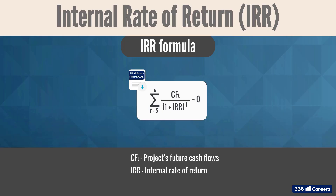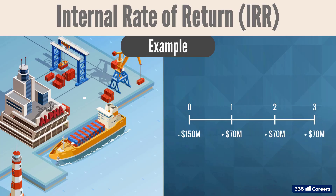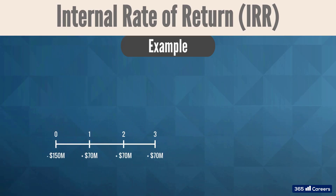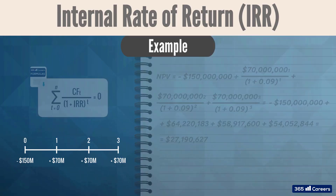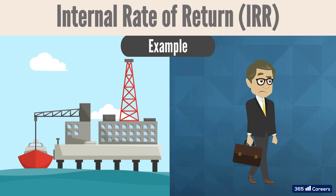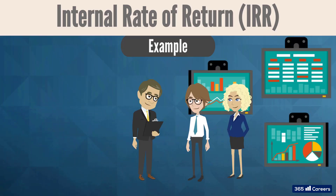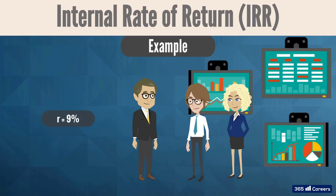Now that we know the general formula for IRR, we are ready for a more complicated example. In our previous video, we calculated the net present value of Alpha's project for building a plant to produce a new type of ship. The cash flows associated with the project are depicted on the timeline. The project has an NPV of $27,190,627, and on a standalone basis it feels like a value-creating endeavor. The CEO is still hesitant and needs additional proof, so he assigns finding the project's internal rate of return to the finance department. The required rate of return is 9%.